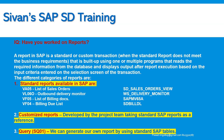Standard reports include VA05 or VA05N list of sales orders, VL06O outbound delivery monitor, VF05 list of billing documents, VF04 billing due list — these are all standard reports already available. Nowadays, the majority of clients look toward utilizing only standard reports. Try to give appropriate explanation. If you have customized a standard report, explain the requirement, how you did it, and what logic you provided. Remember, most people do not provide the logic during interviews — you must be aware of the logic and explain it.